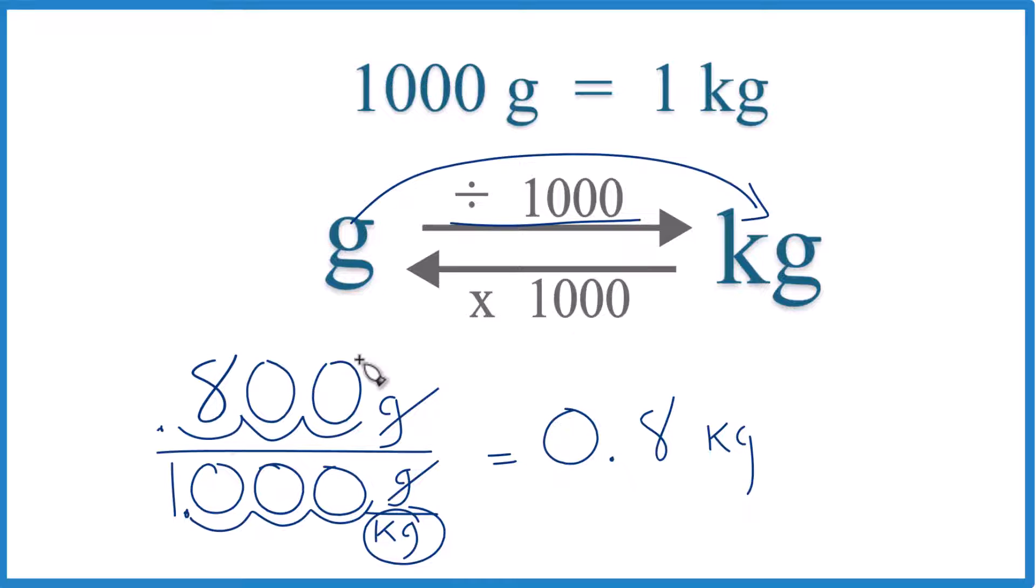So when we convert 800 grams to kilograms, we get 0.8 kilograms. We don't need to write these zeros over here.